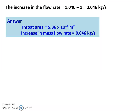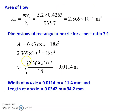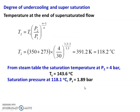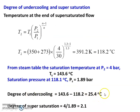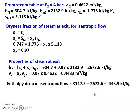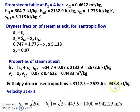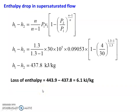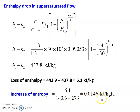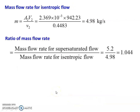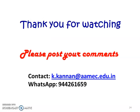Summary of answers: nozzle length = 34.2 mm, width = 11.4 mm; degree of undercooling = 25.4°C; degree of supersaturation = 2.1; enthalpy drop = 443.9 kJ/kg; increase in entropy = 0.0146 kJ/kg·K; ratio of mass flow rate = 1.044. We stop here. Thank you for watching. Please post your comments in the comments box. If you have any queries, contact me. We will meet again with another video lecture in this subject. Until then, bye.